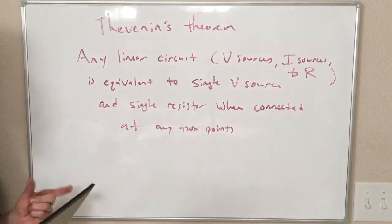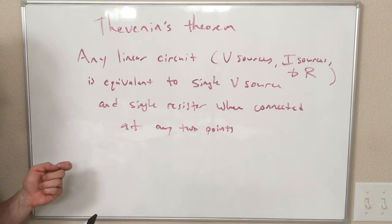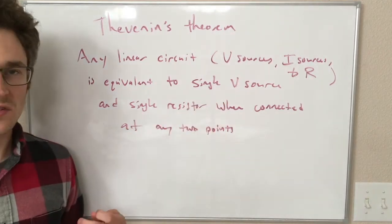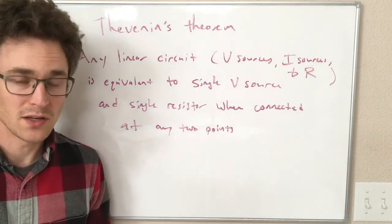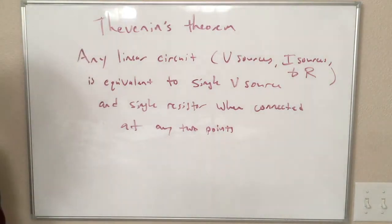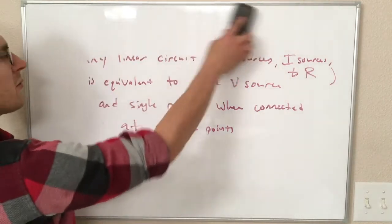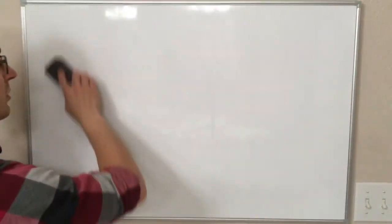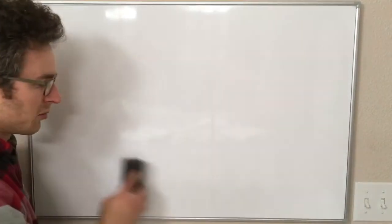I'll say right now, Norton's theorem states exactly the same thing, except instead of a single voltage source and a single resistor, it is a single current source and a single resistor. And one can convert between the two the way we've discussed previously.